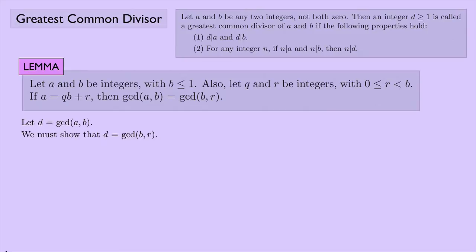And I have to show that D is also equal to the greatest common divisor of B and R. If I've shown that, then I've shown the greatest common divisors are equal. In order to do that, I need to look at the definition of a greatest common divisor and see the two properties I need to show — and in this case, I'm looking at B and R.